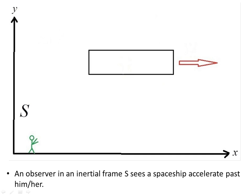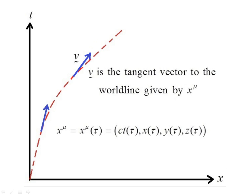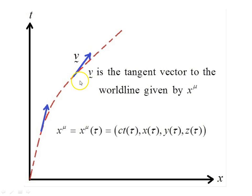The physical setup for this video is a spaceship going past an observer in some frame S, where the spaceship is accelerating due to the thrust of its engines. On a spacetime diagram, here is the world line for an accelerating object — the y and z directions are suppressed, so we have time and x coordinate. The velocity vector forms a tangent to the world line, and these vectors have the same magnitude because the scalar product of the 4-velocity with itself gives minus c-squared.